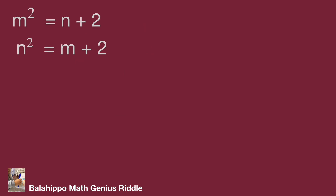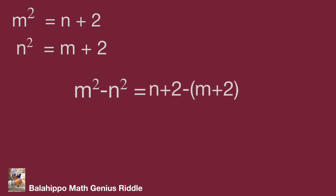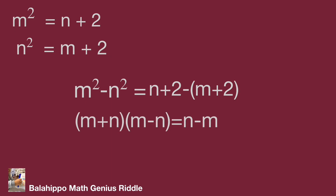Back to the given equations: m squared equal to m plus 2 and n squared equal to m plus 2. Subtracting the second equation from the first, we get m squared minus n squared equal to (m plus 2) minus (n plus 2). Factorizing the left side: (m plus n)(m minus n) equal to m minus n. Dividing both sides by (m minus n), we get m plus n equal to minus 1.